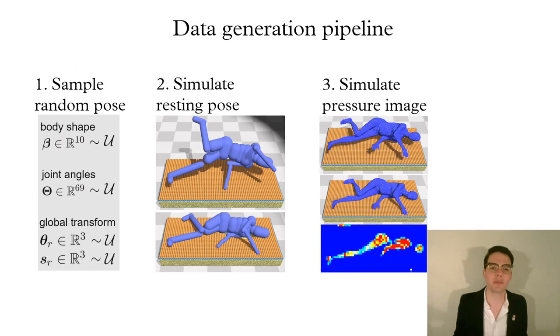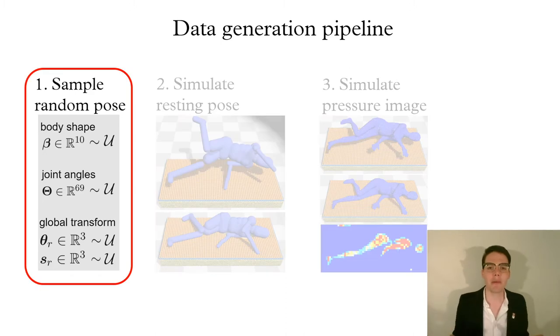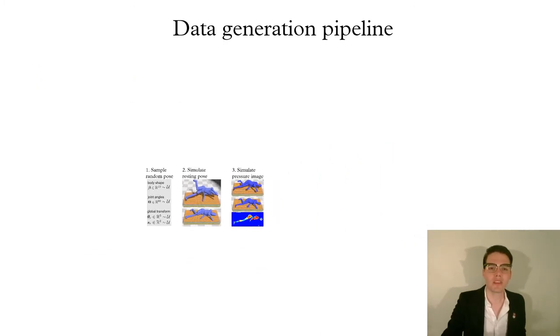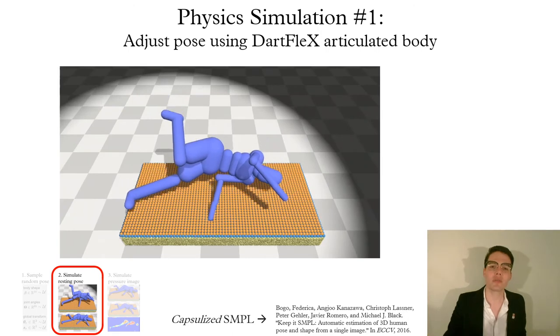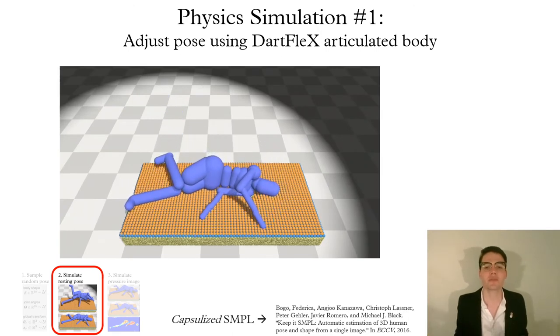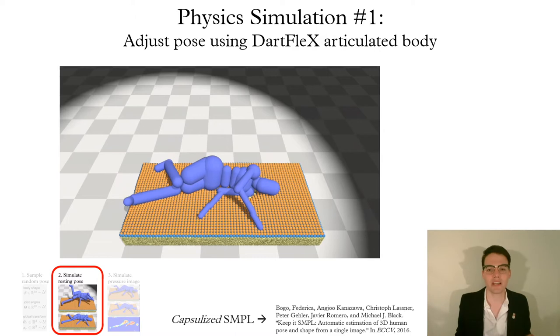First, we randomly sample over the body pose and shape. In comparison to past methods, this provides an unprecedented variety of body poses and shapes that would be extremely difficult to collect in the real world. Next, we find a resting pose by dropping a capsulized ragdoll body onto a soft bed and then wait for it to rest.